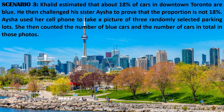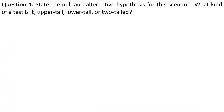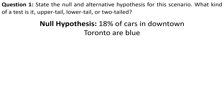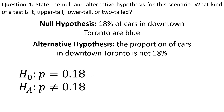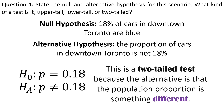Last one. Khaled estimated that about 18% of cars in downtown Toronto are blue. He then challenged his sister Aisha to prove that the proportion is not 18%. Aisha used her cell phone to take a picture of three randomly selected parking lots, then counted the number of blue cars and the total number of cars in those photos. Starting with the hypotheses: the null is that 18% of cars in downtown Toronto are blue. The alternative is that the proportion is not 18% — it's something else. This makes it a two-tailed test.